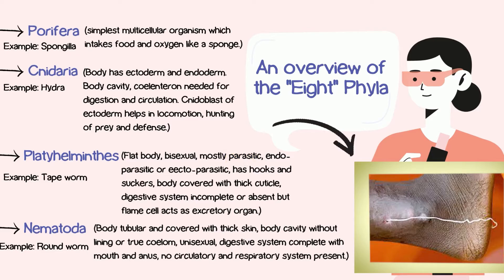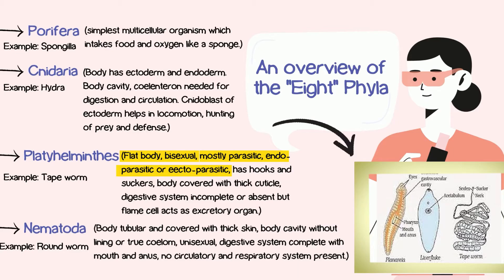Platyhelminthes has a flat body structure. It is mostly parasitic. It is bisexual, meaning it has both female and male categories. The body is covered with a thick cuticle. The digestive system is incomplete or absent.